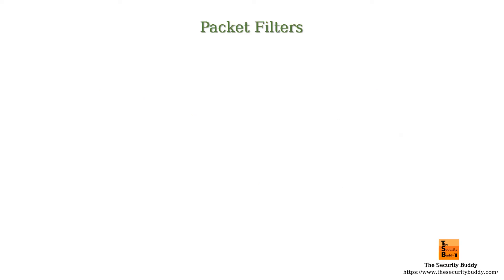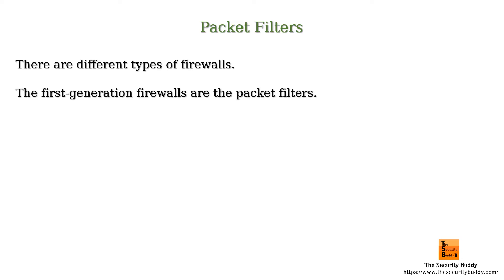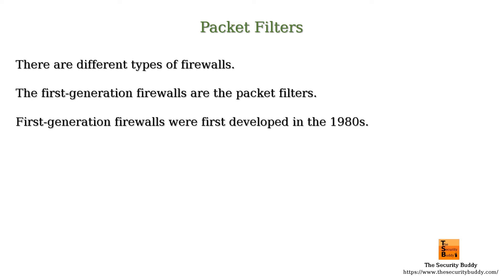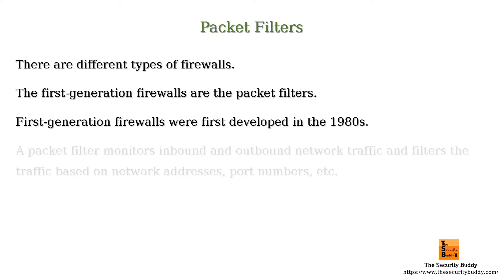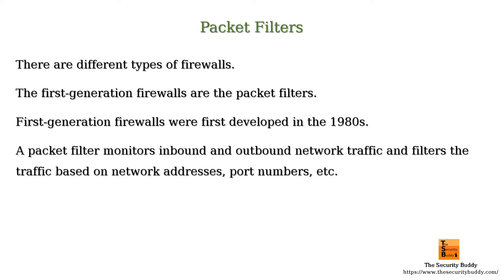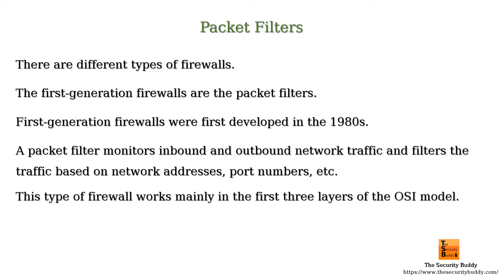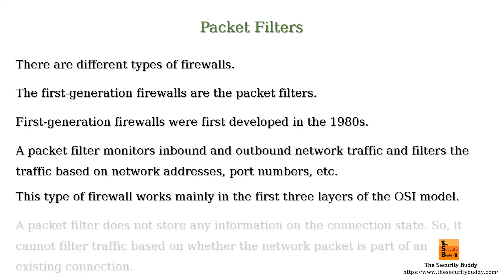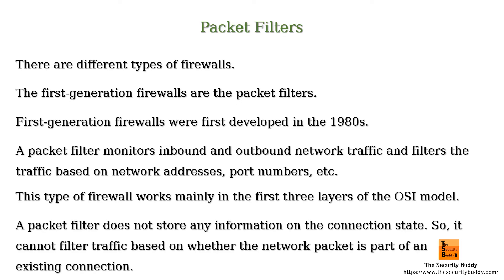There are different types of firewalls. The first generation firewalls are the packet filters, first developed in the 1980s. A packet filter monitors inbound and outbound network traffic and filters it based on network addresses, port numbers, etc. This type of firewall works mainly in the first three layers of the OSI model. A packet filter does not store any information on the connection state, so it cannot filter traffic based on whether the network packet is part of an existing connection.